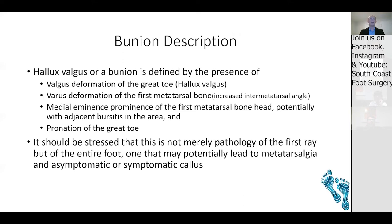What is a bunion? Bunions are known as hallux valgus or hallux adductor valgus. The valgus deformation is of the great toe — the hallux — and the varus deformation of the first metatarsal increases the intermetatarsal angle. This produces that medial eminence prominence of the first metatarsal bone, and we also find adjacent bursitis, a Joplin's neuroma of the plantar digital nerve, and pronation of the great toe.